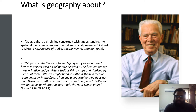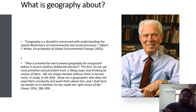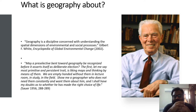By Gilbert F. White, geography is defined as 'a discipline concerned with understanding the spatial dimensions of environmental and social process.' He also says that a pre-selective bent towards geography may be recognized before it asserts itself as a deliberate election. The first, most primitive and persistent trait is liking maps and thinking by means of them — we are empty-handed without them in the lecture room, in study, or in the field. Show me a geographer who does not need them constantly, and I shall have my doubts as to whether he has made the right choice of life.